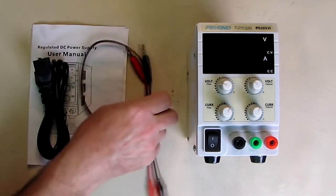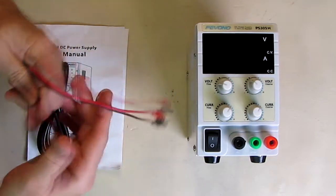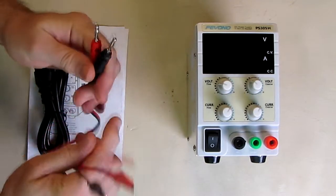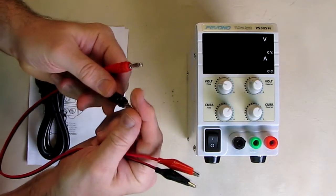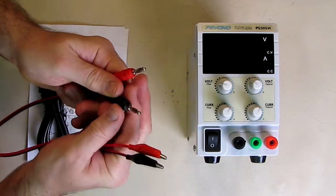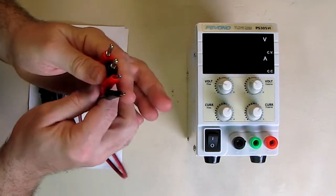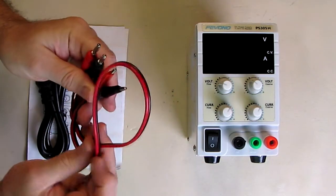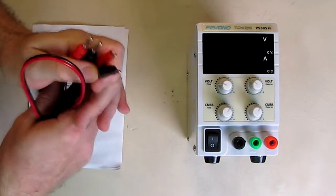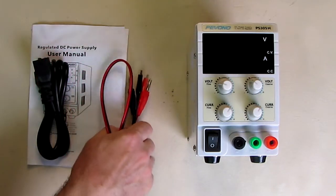It also comes with very nice quality test leads that have a rotatable center part on there. The conductors are soldered - I checked them. They're very low resistance and not a bad gauge to work with to allow that five amps through.